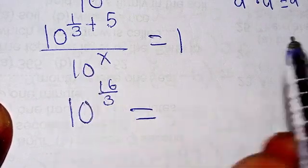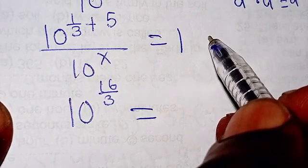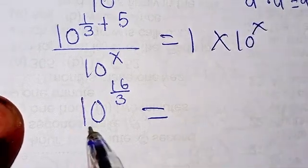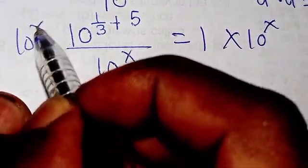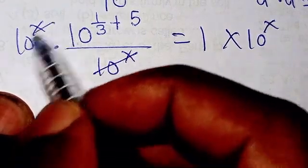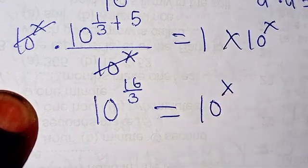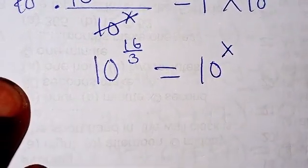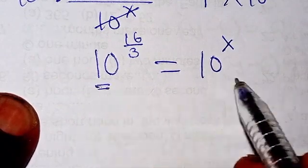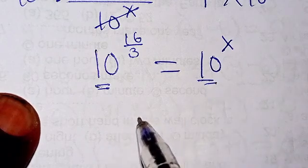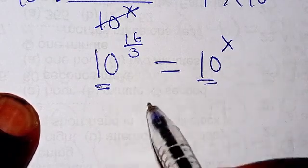Equals... and here if I multiply this place by 10 to power x and here also by 10 to power x, you know that this will cancel this, so I'm going to be having 10 to power x. So now from here we can see that we are having the same basis from both sides of the equation, so this is telling us that we are going to equate the powers.